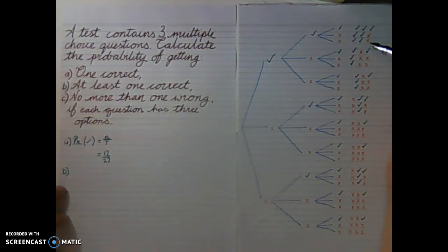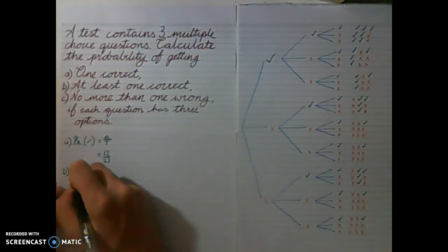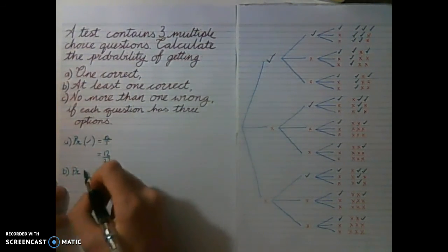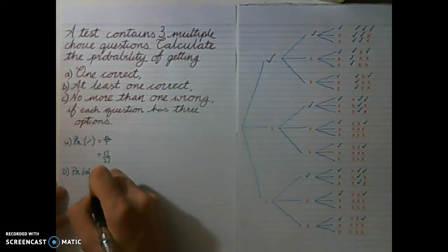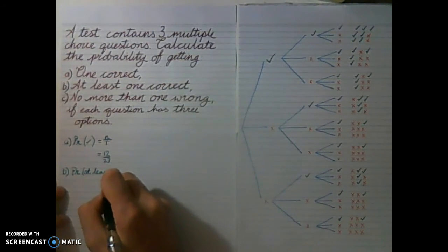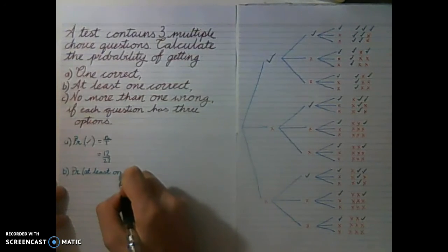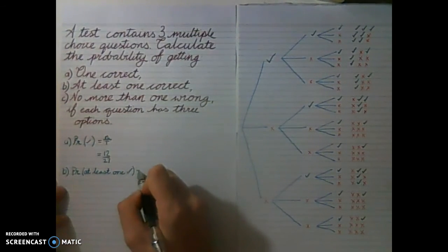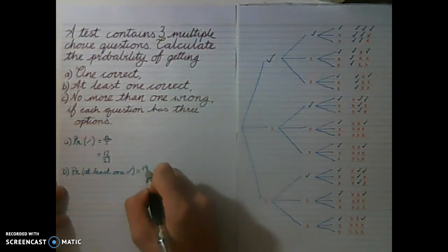So we can now count all of our outcomes over here that have at least one tick. 1, 2, 3, 4, 5, 6, 7, 8, 9, 10, 11, 12, 13, 14, 15, 16, 17, 18, 19. So the probability of getting at least one tick is equal to 19 over 27.